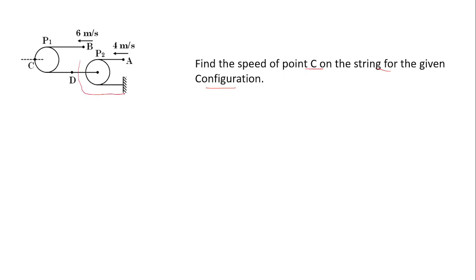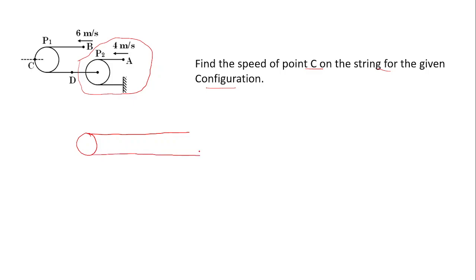First, we will consider only one part of the configuration. This is pulley P2, and suppose it is tied with a long string which is fixed at one end. Now, if I push point A by distance x while holding P2 in place, this part of the string will become loose. How much extra length accumulates? The same length x.